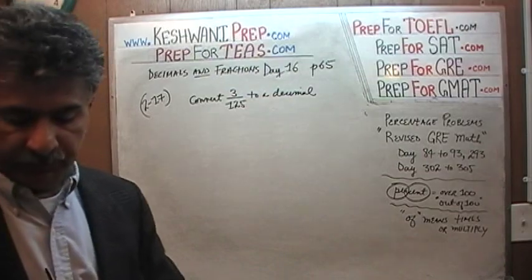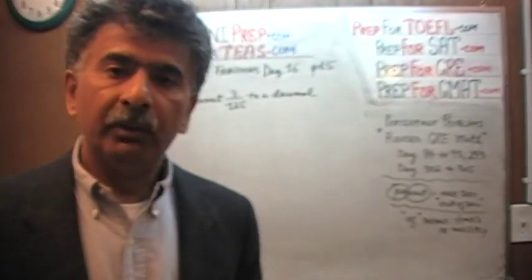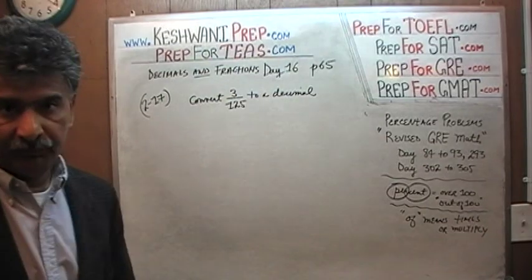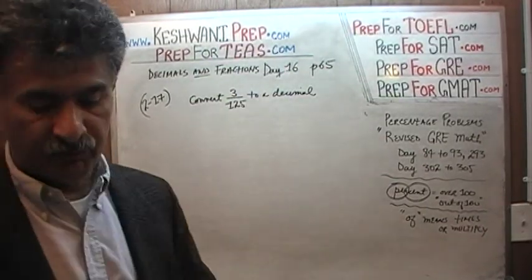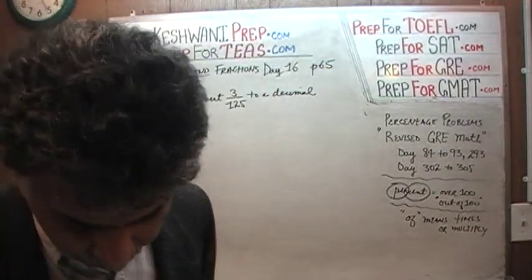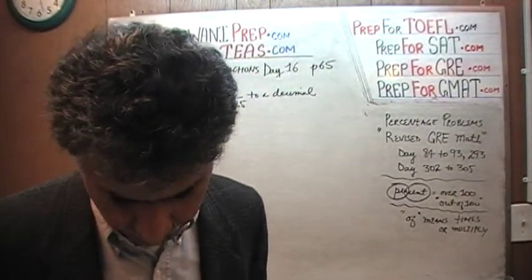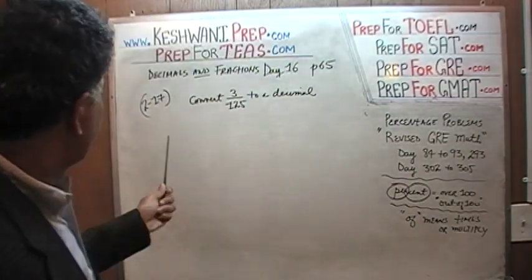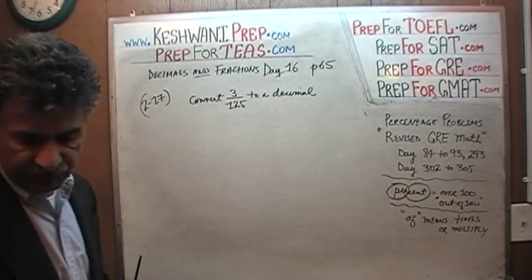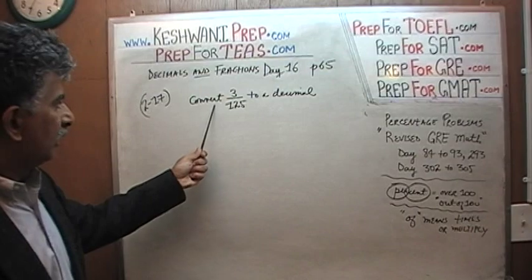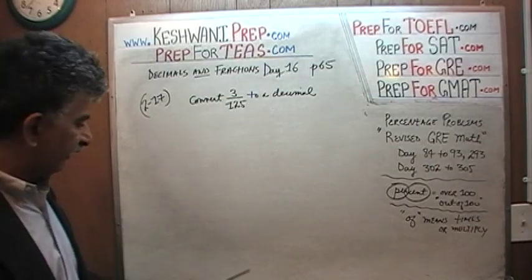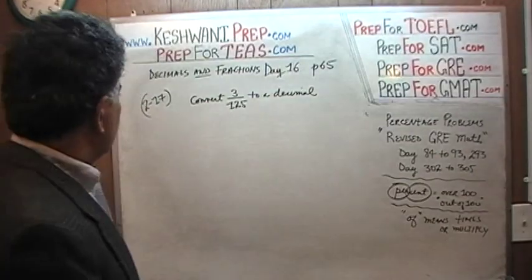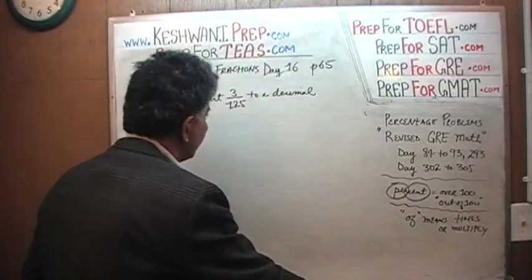Today on page number 65, we will deal with the notion of decimals and fractions — how to convert decimals to fractions, fractions to decimals, and so on. There are a few problems there. The very first one on page number 65 is problem number 217, which is asking us to convert 3 over 125 to a decimal. Let's see what we can do here.